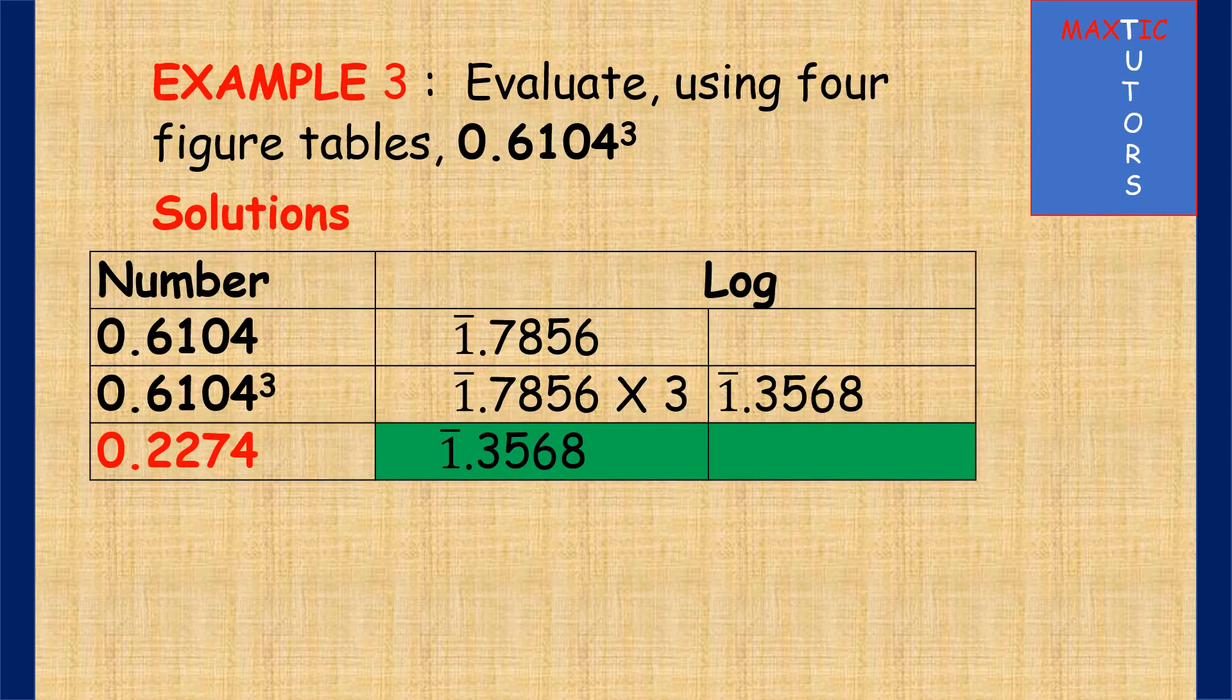Example 3. 0.6104 raised to the power 3. As usual you find the log of the number. It has 1 zero, so it is bar 1. Then from logarithm of number 61 under 0 difference 4 will give you 7856. Then raised to the power 3 will be bar 1.7856 times 3. And by the time you multiply that you get bar 1.3568.